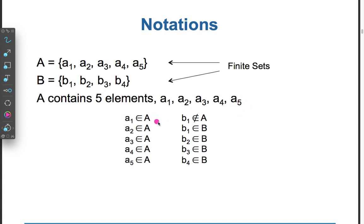a1 belongs to A. b1 does not belong to A. a2 belongs to A. b1 belongs to B. a3 belongs to A. b2 belongs to B. A4 belongs to A. B3 belongs to B. A5 belongs to A. B4 belongs to B.